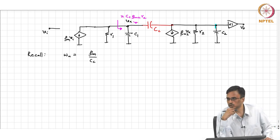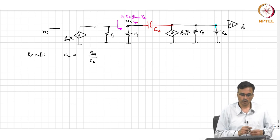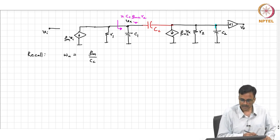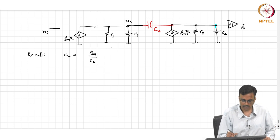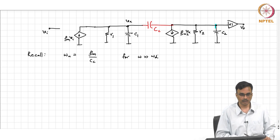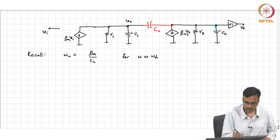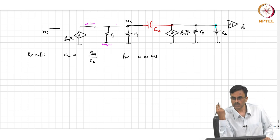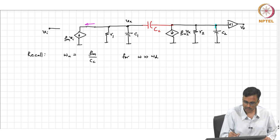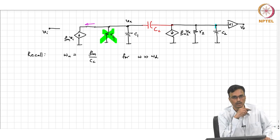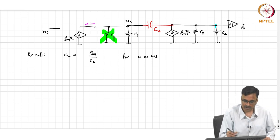There must be some intuition to this. The intuition is the following. At frequencies much beyond the dominant pole frequency — for omega much, much larger than the dominant pole frequency — where is all this current flowing? It is going through the capacitors. Nothing is flowing through the resistances. So I am going to delete r1. All this current is going through the capacitance.